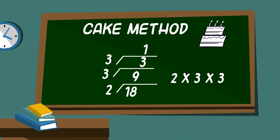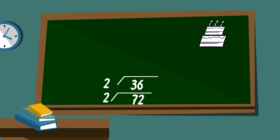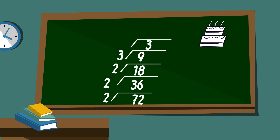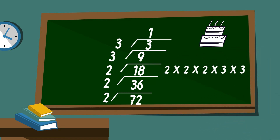Let's work another example: 72. I will write a bracket over 72. 2 goes into 72, so I will write 36 above the 72 and draw another bracket. Next, 2 will go into 36 eighteen times. Next, 2 will go into 18 nine times, so I will write the 9. Then 3 will go into 9 three times. And 3 is divisible by 3 — I put a 1 on top; it looks like a candle. So the prime factorization of 72 is 2 times 2 times 2 times 2 times 3 times 3.